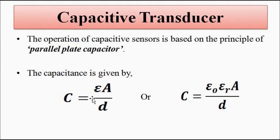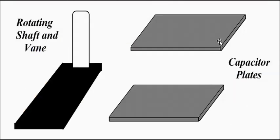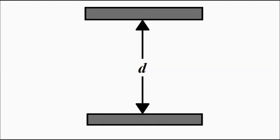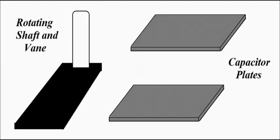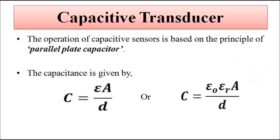In the formula C = εA/d, epsilon (ε) is the permittivity of the medium, A is the overlapping area of the plates, and d is the distance or separation between the parallel plates. The capacitance formula can also be written as C = ε₀εᵣA/d.